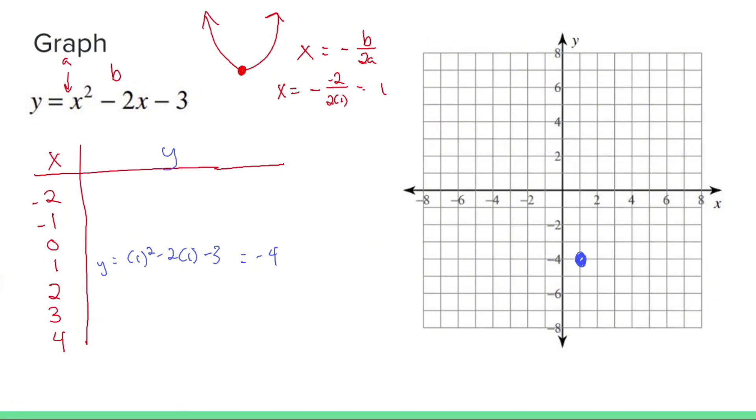Let's try it again. Let's plug in 2. So I get 2 squared, which is 4, minus 2 times 2, which is also 4. So 4 minus 4 goes away. Minus 3 is negative 3. So 2 gives us negative 3.